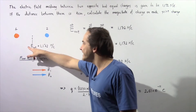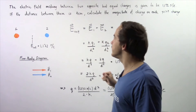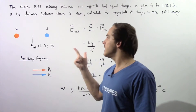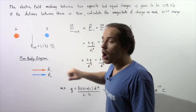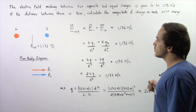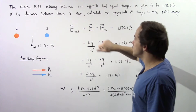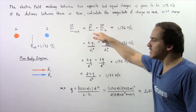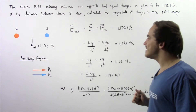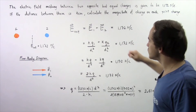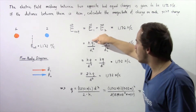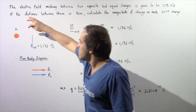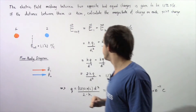The net electric field at this point is 1172 N/C, and it equals the sum of all electric fields acting there. Since E1 and E2 are both positive, we have: E_net = E1 + E2 = 1172 N/C. E1 can be written as K times Q1 divided by D1 squared, where D1 is the distance from point charge 1 to the midpoint.